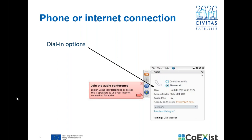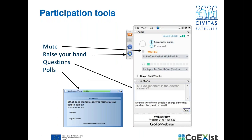If you have any problem with the audio, please note that you have the option of dialing in — just click on the phone call option in the audio settings and choose a number from the list of countries available. All participants are muted by default to avoid background noise, but you have the chance of raising your hand if you have any comment or question and we can unmute you. Please remember to mute yourself again after you post your question. During the Q&A session there is also a question box, and you can also contact us about any technical difficulties.